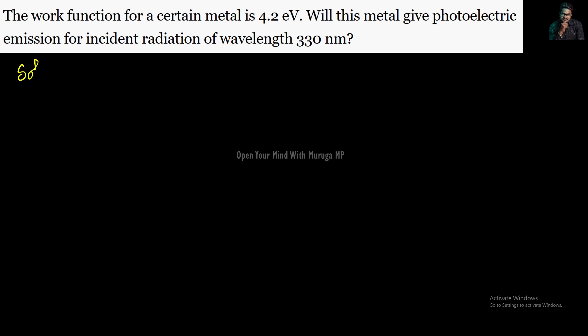The work function of a certain metal is 4.2 electron volts. Work function phi naught is the minimum energy given to the metal for the electron to escape from the metal.